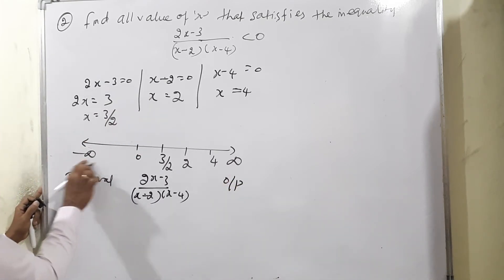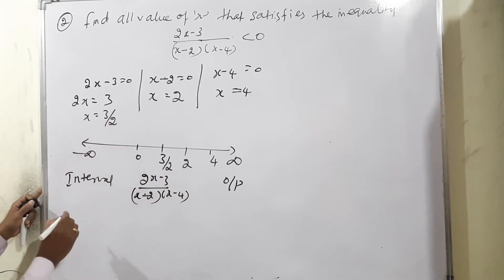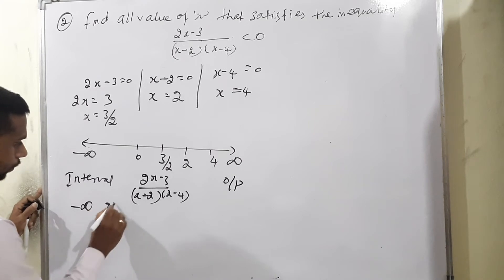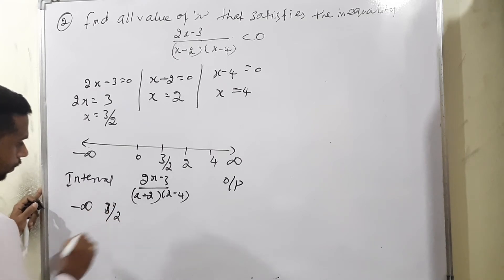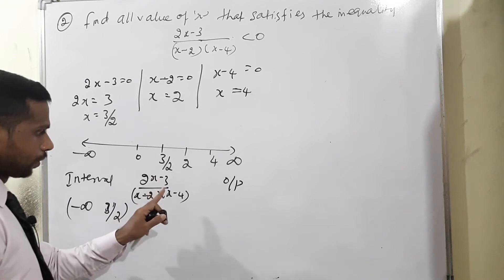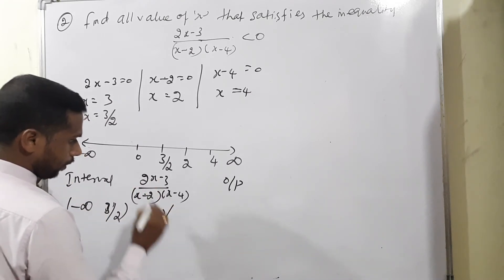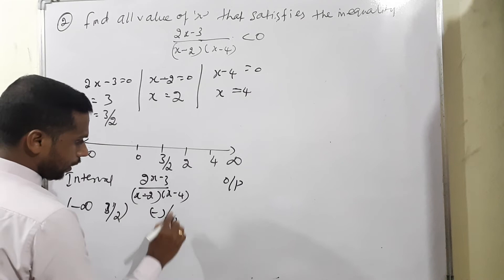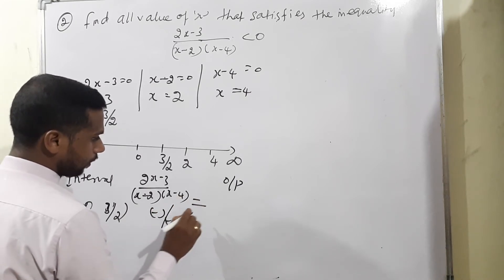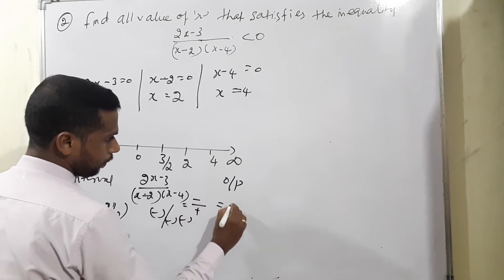The expression is (2x-3)/((x-2)(x-4)) < 0. First interval: (-∞, 3/2). Take x=0: (2(0)-3)/((0-2)(0-4)) = (-)/((-)(-)) = (-)/positive = negative. Output: negative.